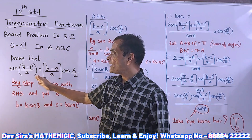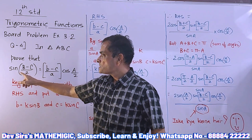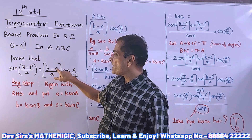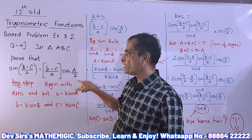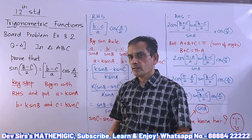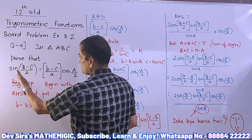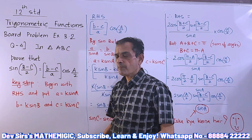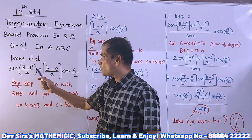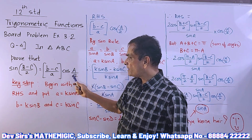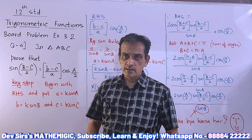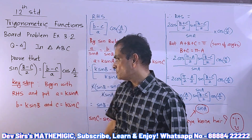In triangle ABC, prove that sin of (B minus C) upon 2 is equal to (b minus c) upon a times cos(A/2). As I mentioned in the earlier lecture, capital letters indicate the angles — whether it is sin or cos, capital letters are the angles. Small letters indicate the sides of the triangle.